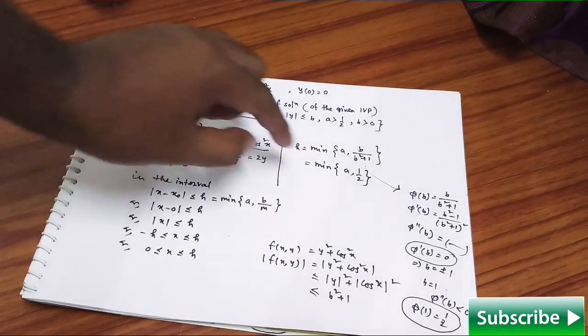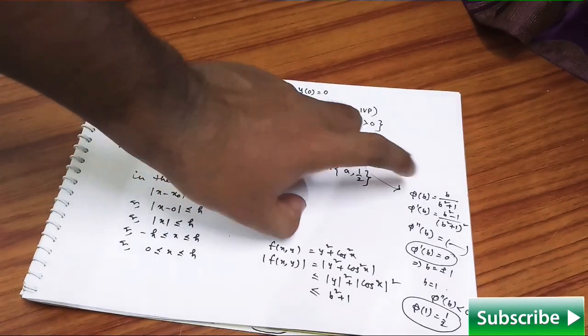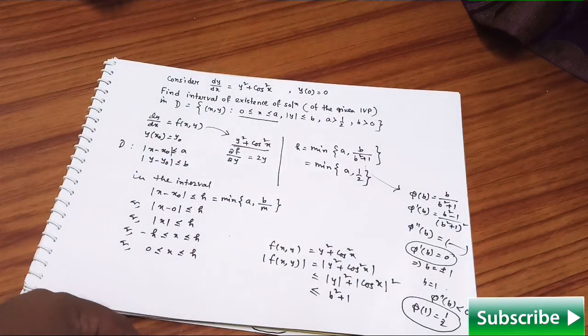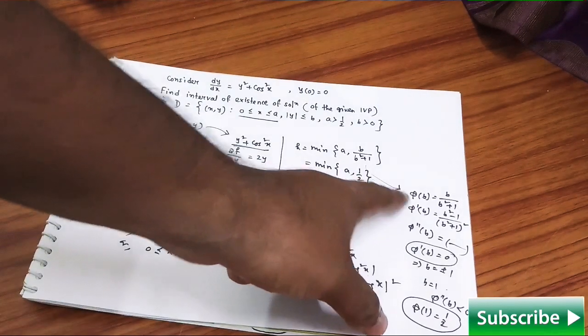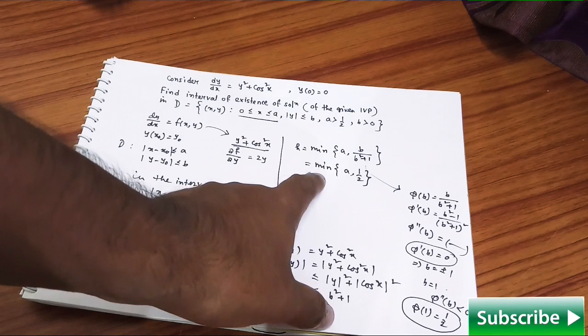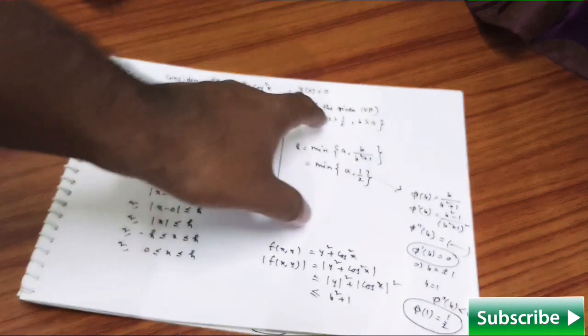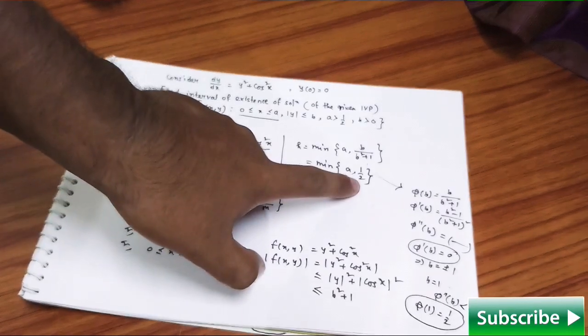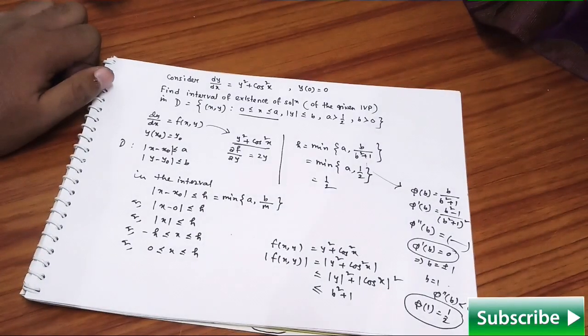So minimum of a, 1/2. You got the idea here: this part b/(b² + 1) you just simply rename it by φ(b), and a simple procedure you have followed from your plus-12 level knowledge. You got the maximum value of that function as 1/2, and you just need to find the minimum of these two quantities: a, 1/2. Look at, a was greater than 1/2, so what will be the minimum of these two quantities? Obviously it is going to be 1/2.